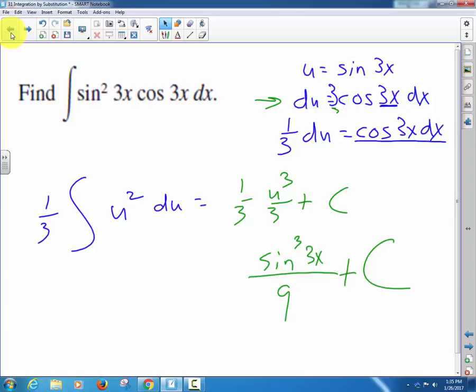I think it's easiest because we can just divide the 3 out from here and get it over to the other side. If we finish this off, we get 1/3 u cubed over 3 plus c, which becomes sine 3x cubed over 9 plus c. Follow it there? Because we're integrating u. That's how we got, so it's u squared.